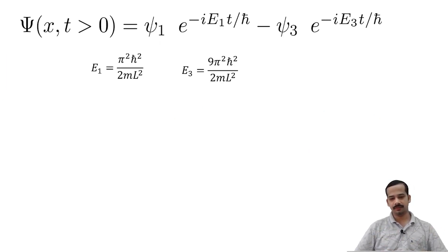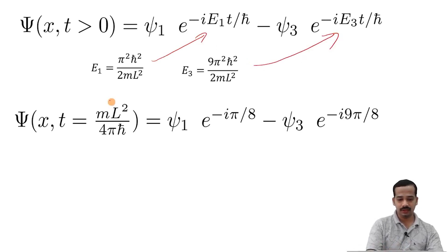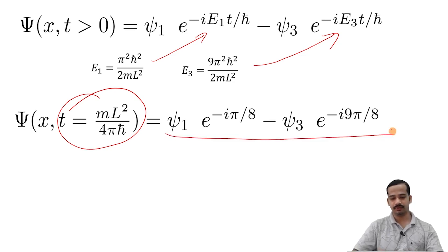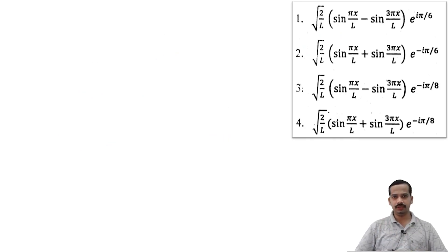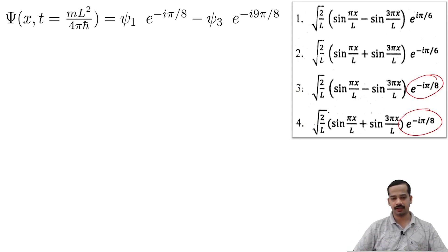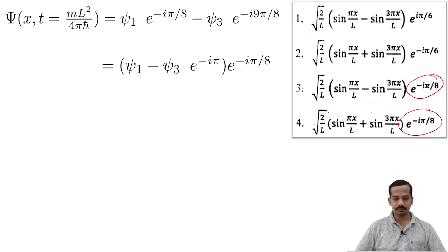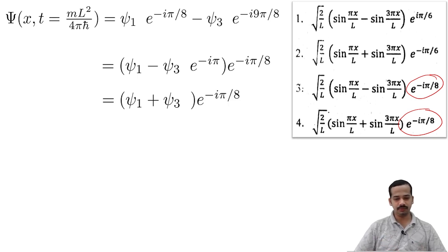This is the state at later time. When they ask for the state at t equal to mL-squared by 4 times 5 h-bar, we substitute E1, E3, and t to get the expression. Don't solve completely without looking at the options. Seeing options 3 and 4, e to the power minus i pi by 8 is outside the bracket, so let me factor that out. This gives psi-1 minus psi-3 times e to the power minus i pi, multiplied with e to the power minus i pi by 8. Since e to the power minus i pi equals minus 1, this becomes (psi-1 plus psi-3) times e to the power minus i pi by 8. Therefore option 4 is the right answer.